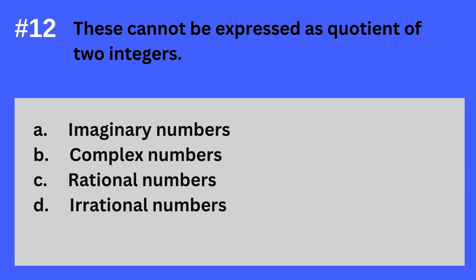Question 12. These cannot be expressed as quotient of two integers. A. Imaginary numbers. B. Complex numbers. C. Rational numbers. D. Irrational numbers. The answer? It's D. Irrational numbers. These cannot be expressed as quotient of two integers — Irrational numbers.